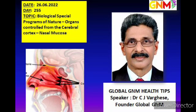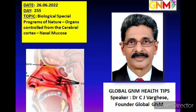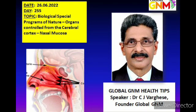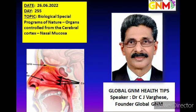The nasal mucosa has an additional function to clean and moisten the air before it enters the deeper air passages and lungs. This is done by the nasal mucus produced by the endodermal cells acting as nasal glands and contained in the residues of the epithelial nasal mucosa, because at present there are no endodermal sub-mucosa in the nasal cavity.